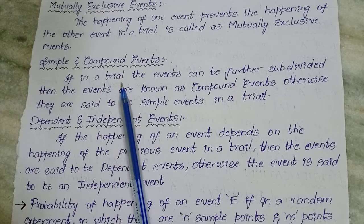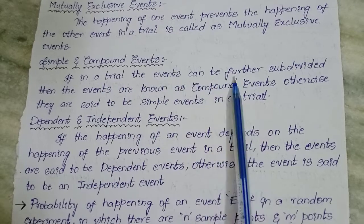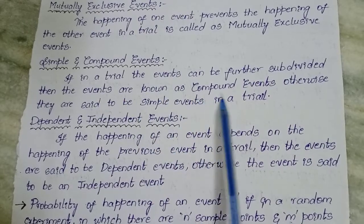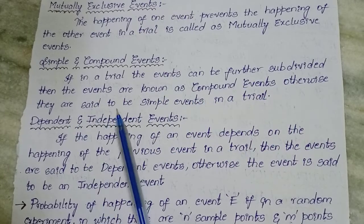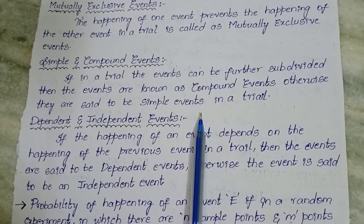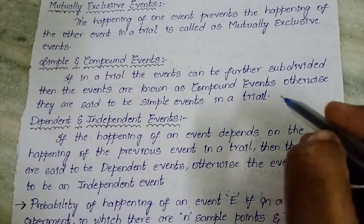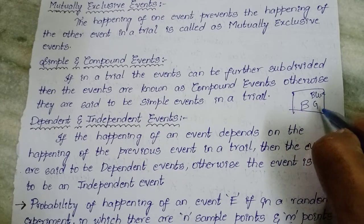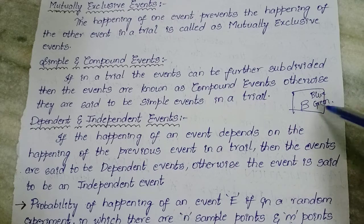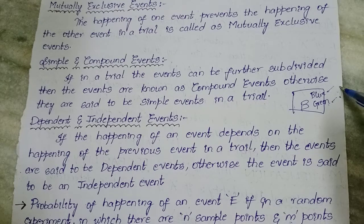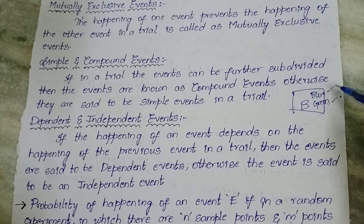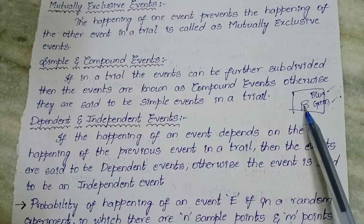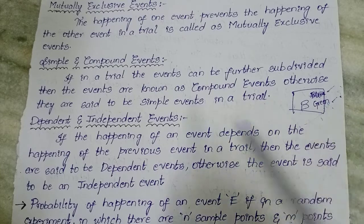Simple and compound events. If in an experiment or a trial the events can be further subdivided, then the events are known as compound events. Otherwise, they are said to be known as simple events. For example, consider a box with blue balls and green balls. If you pick up a ball from it, it may be either blue or green — you don't know. Picking up a ball and then deciding whether it is blue or green is a compound event. If it contains only green balls, then it's a simple event.